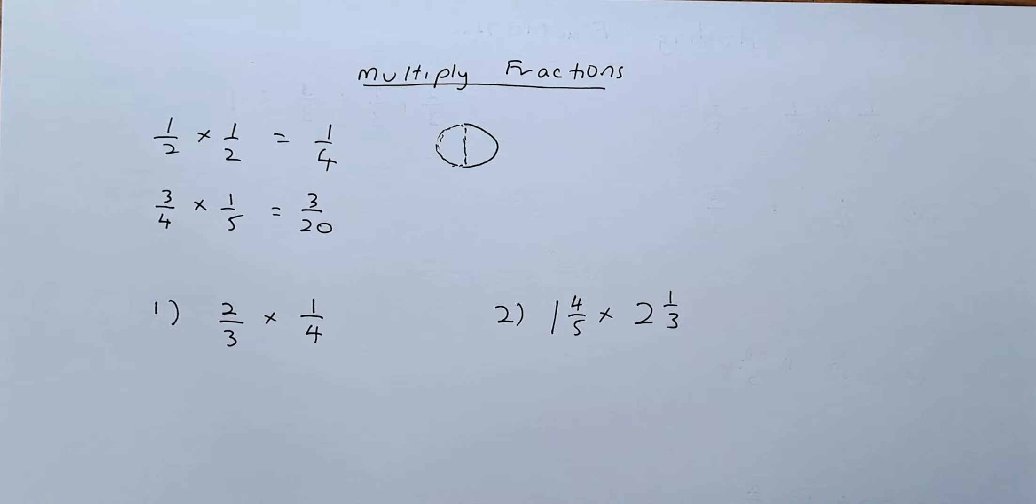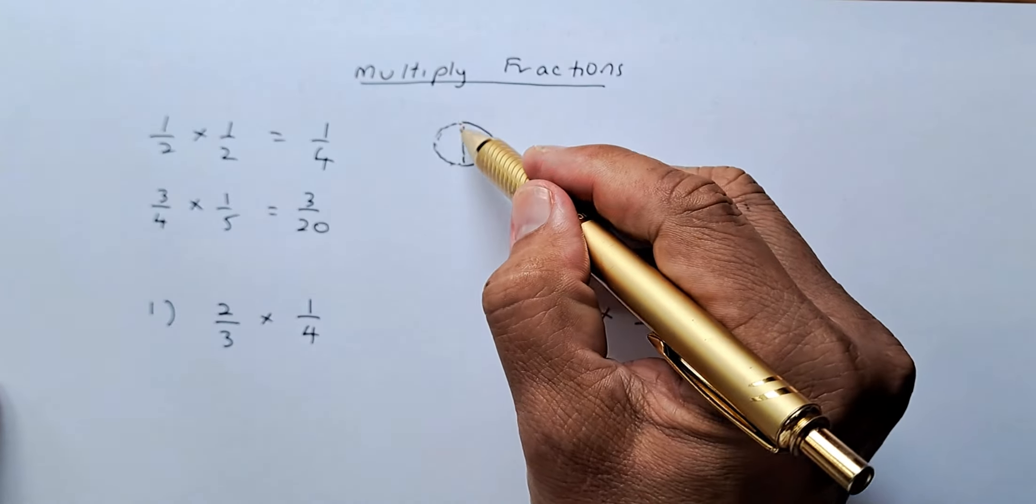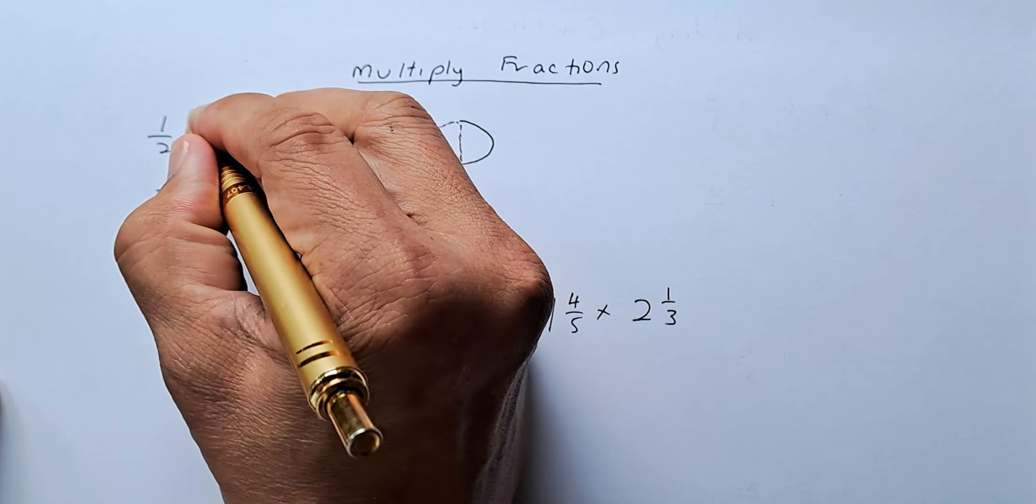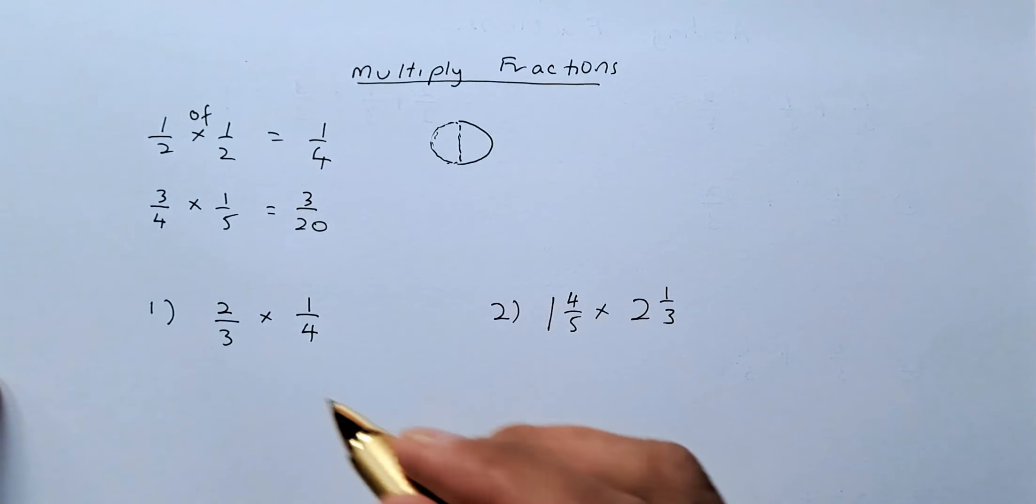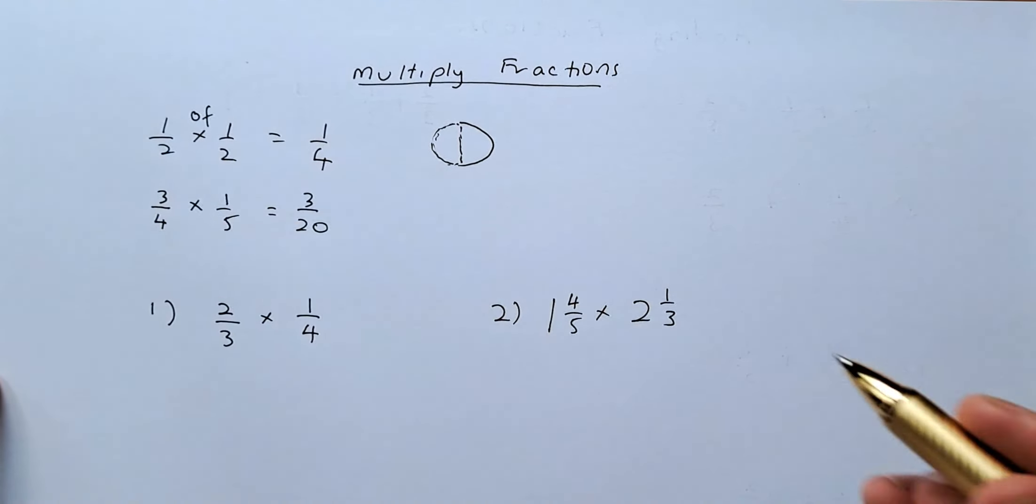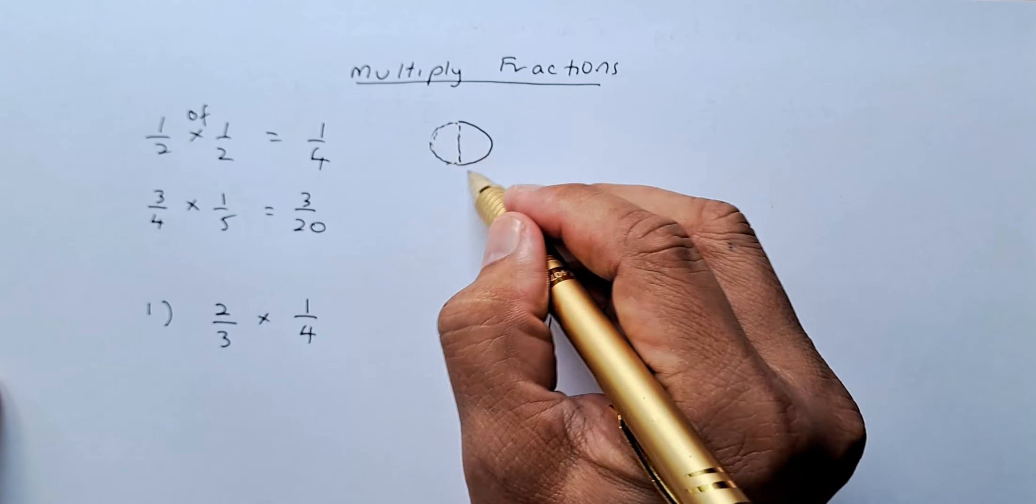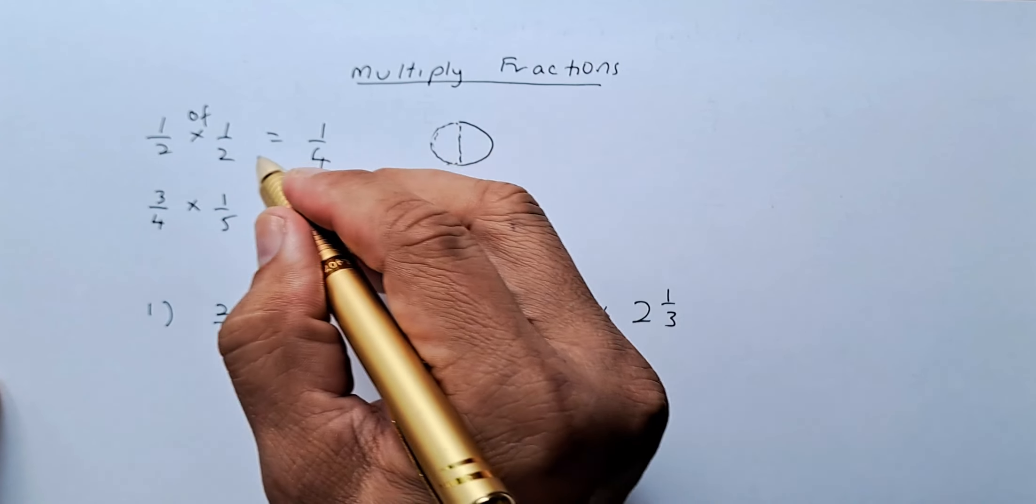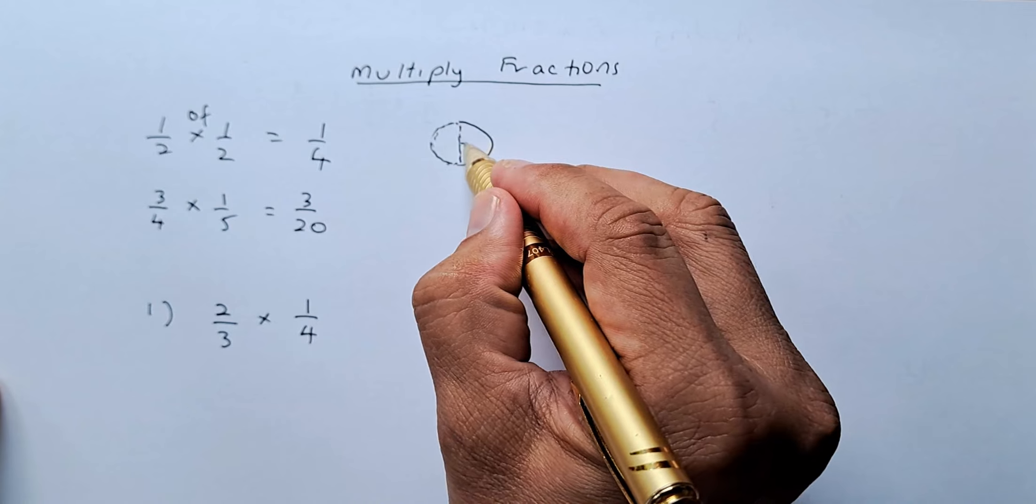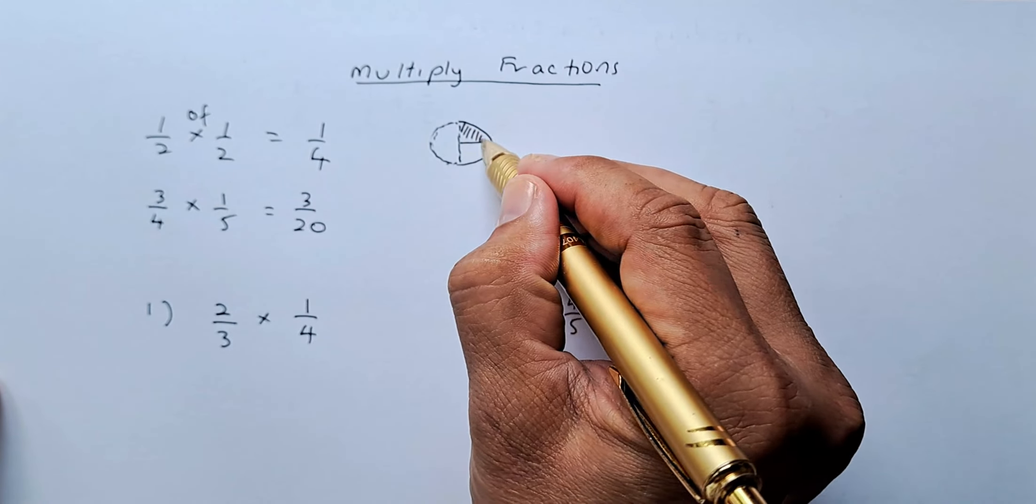So we know that half times half is a quarter. This makes sense because if I say half times half, it means half of half. The word multiply means of. So if I say half of a whole is a half, if I say half of a half, it means that I'm talking about a quarter here.